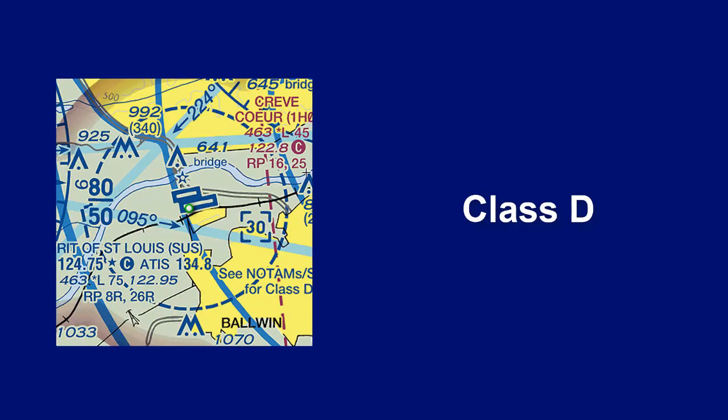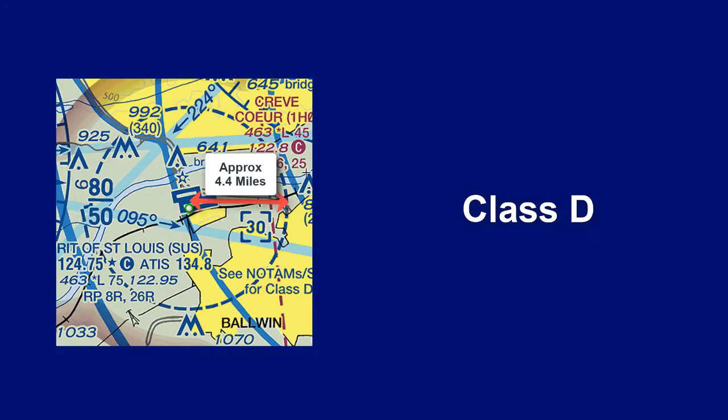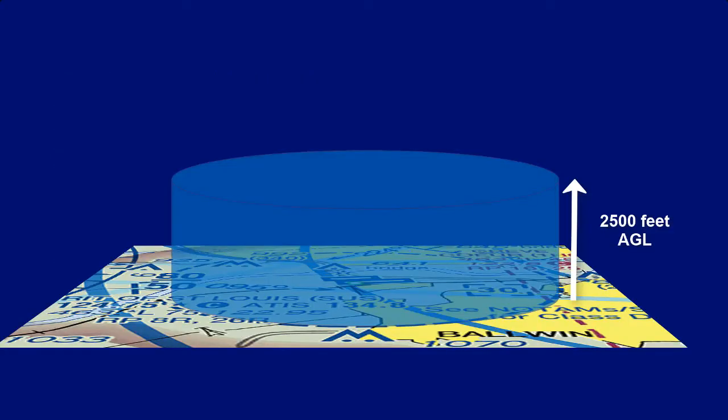Class D airspace has a tower, as indicated by the blue color on this chart, and is depicted by a circle of blue dashes. The airspace radius from the center of the airport to the edge of the airspace is approximately 4.4 miles, but can vary some. The airspace starts at the surface and rises approximately 2,500 feet above ground level.